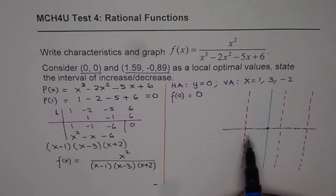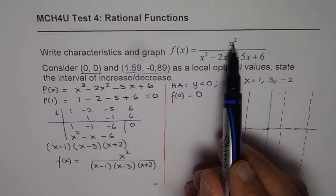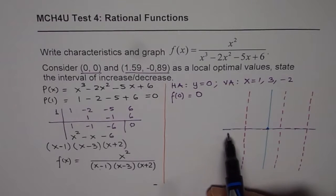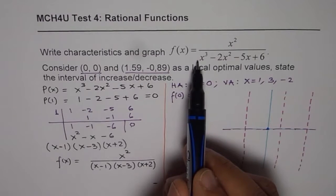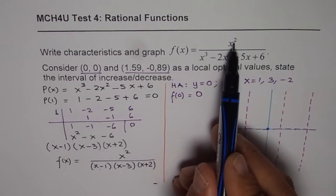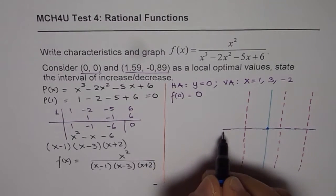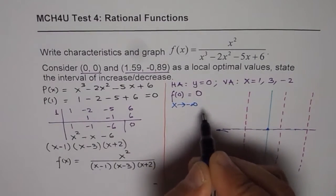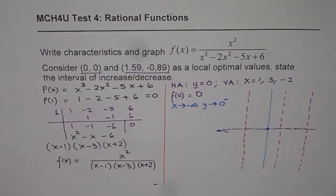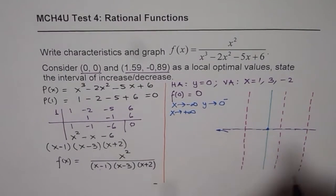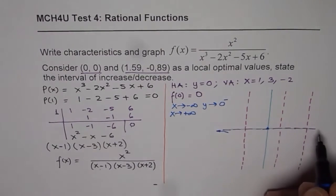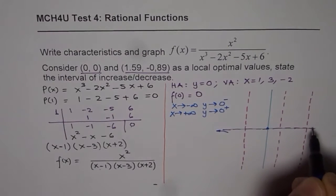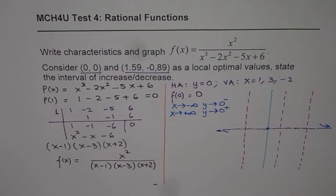To sketch the graph, we take large values of x to determine end behavior. If x is a large negative number like -1000, the numerator (x²) is positive but the denominator is negative, so we approach 0 from the negative side. As x approaches positive infinity, plugging in 1000 gives a small positive value, so y approaches 0 from the positive side.